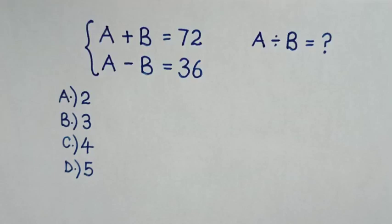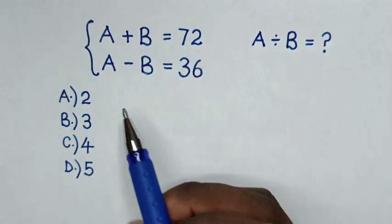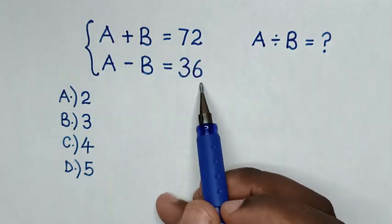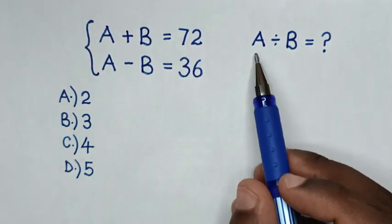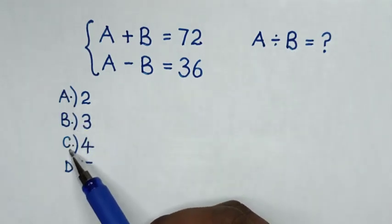Hello, how to solve this simultaneous equation: A plus B is equal to 72, A minus B is equal to 36, to find the value of A divided by B, by selecting between the answers in A, B, C, and D.